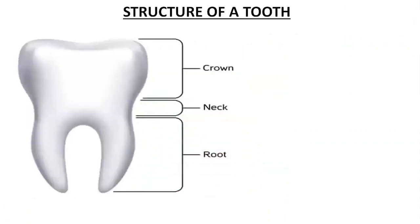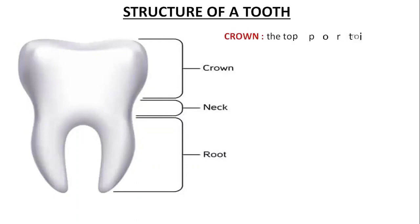Now, all the teeth have the same general structure and it consists of three parts, which you can see in the figure over here. It consists of crown, neck and the root. So let us begin with the first one, that is the crown.